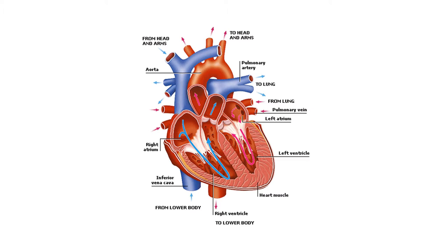Looking at the picture of the human heart, you can see that there are four main chambers which are the right atrium, the left atrium, the right ventricle and the left ventricle.